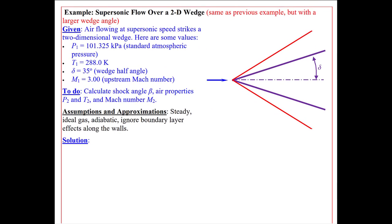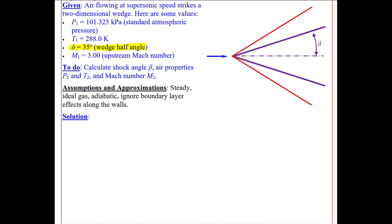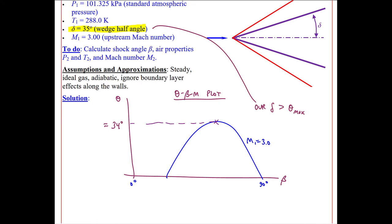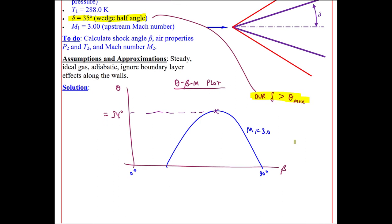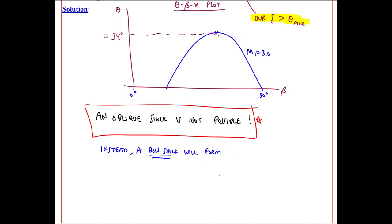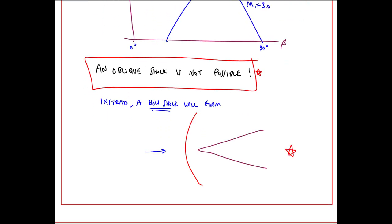I'll do one more example. This is exactly the same problem as the previous one, except with a bigger wedge half angle — it was 20 degrees before. This one turns out to be a lot simpler, because at Mach number 3 the theta-max is about 34 degrees, and our delta is greater than theta-max. So an oblique shock is not possible for this case. Instead, a bow shock will form. We can calculate pressures across the normal part of the shock, and if we knew the shape of the bow shock we could locally calculate all properties downstream, but we're not going to do that here.